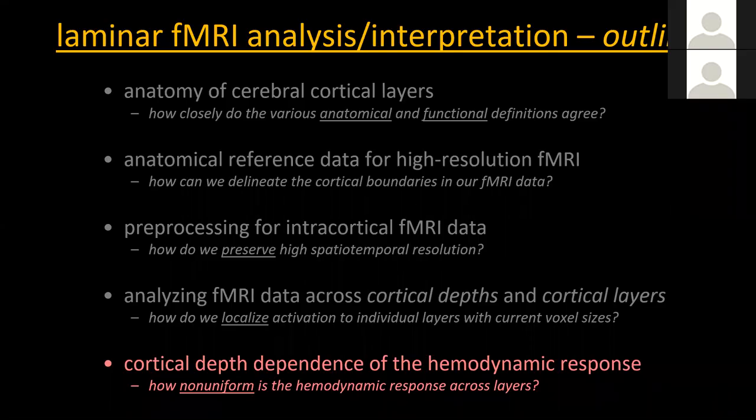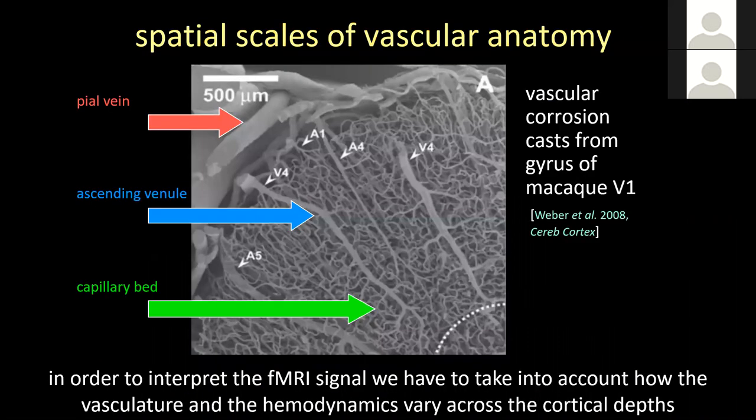It's good to define the problem that we're facing and get some sense for what the solutions may be. Going back to this corrosion cast I showed before, just to highlight the different scales of vascular anatomy — in order to interpret our fMRI signals, we need to take into account how the vasculature and the hemodynamics vary across cortical depths, and they both vary systematically.